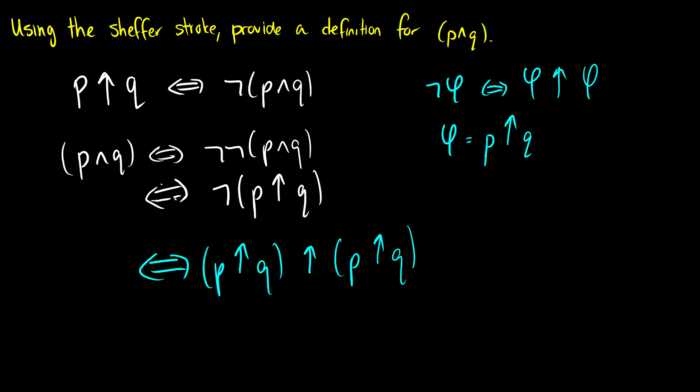Because we know our method of changing the negation into the Schaeffer stroke we can change this negation into the Schaeffer stroke by taking p up q and upping it with itself. So that is how you use the Schaeffer stroke to provide a definition for p and q.